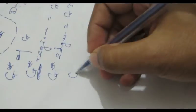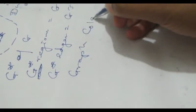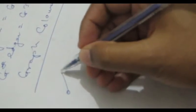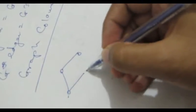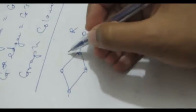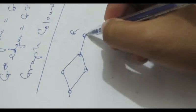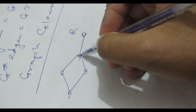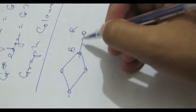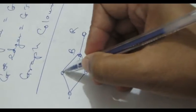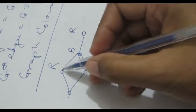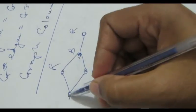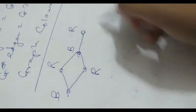Now we'll go to graph coloring. We'll color this graph. The rule is you cannot color adjacent vertices with the same color. This one is red — you can't color the adjacent vertex red, so we color it blue. Now you can reuse red here, and blue again over here. That is graph coloring.